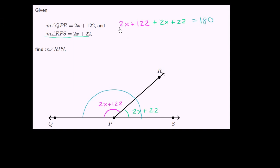And now we can add, we can start simplifying this. We have two x's, we have another two x's. So those are going to add up to be 4x. And then we have 122 plus 22, so that's going to be 144. And the sum of those two are going to be equal to 180 degrees.